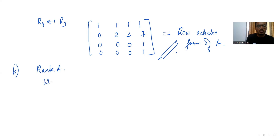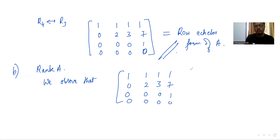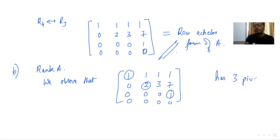Now we observe the row echelon form: 1, 1, 1, 1 / 0, 2, 3, 7 / 0, 0, 0, 1 / 0, 0, 0, 0. There are three pivots. As there are three pivots, therefore rank A equals 3.